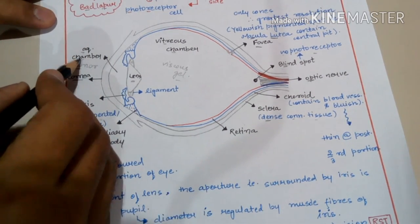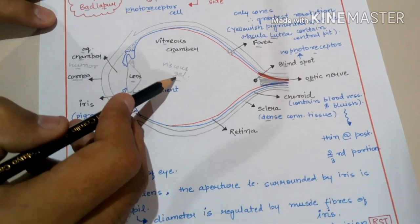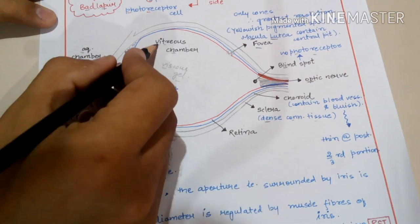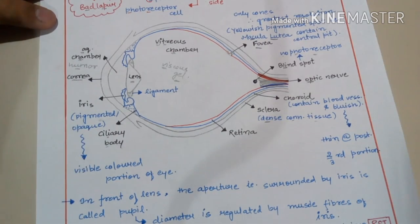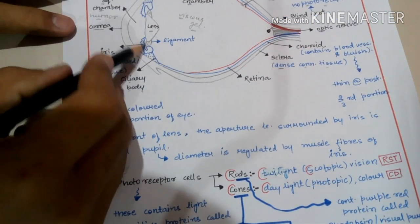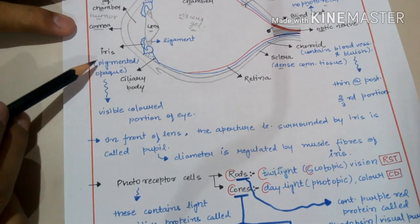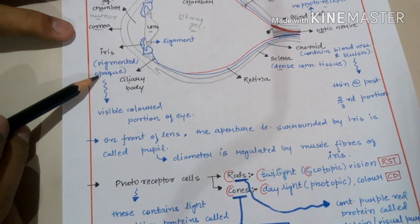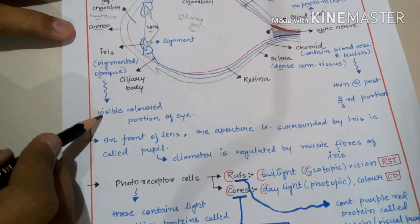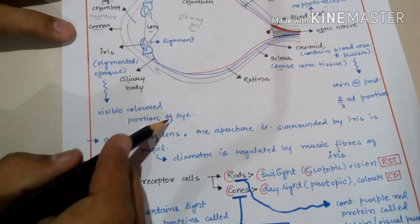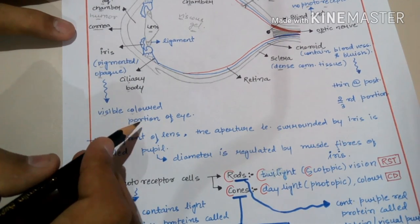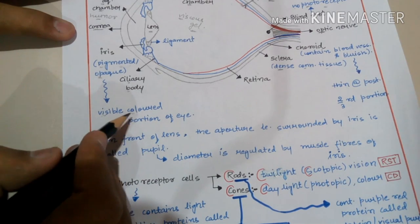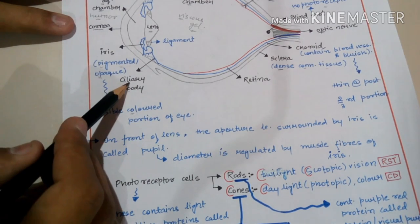We have discussed blind spot, fovea, vitreous humor, aqueous humor, cornea, and lens. The aqueous chamber contains a watery fluid, and the vitreous chamber contains a viscous gel-like fluid — 'vitreous' and 'viscous' are linked. The iris is a pigmented, opaque structure of the eye. It is the visible colored portion of the eye — when you look at a person's eye, the colored part you see is the iris.